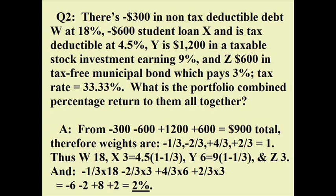Now the after-tax returns: the 18% credit card has no tax deduction, so it remains 18%. The 4.5% student loan minus one-third now only costs us 3%. The 9% stock market minus one-third is now 6%. And the tax-exempt bond at 3% remains 3%.